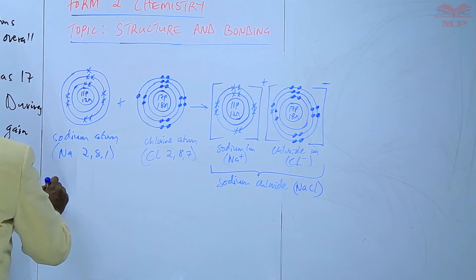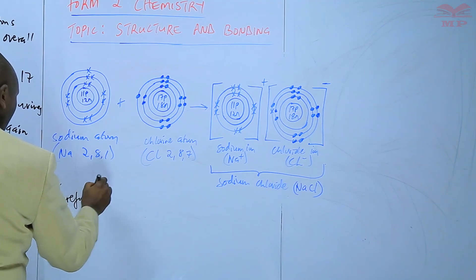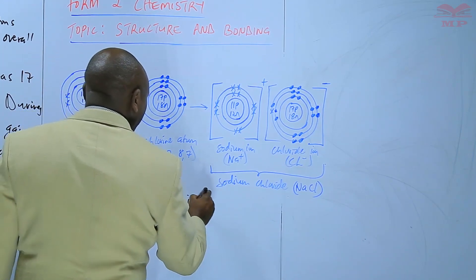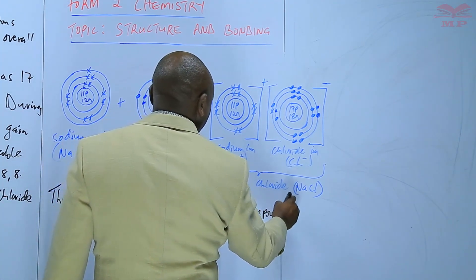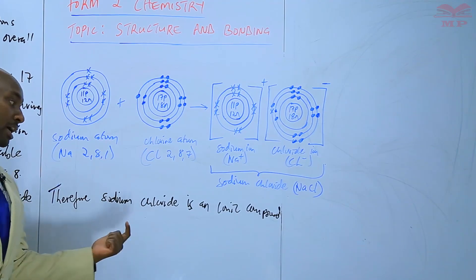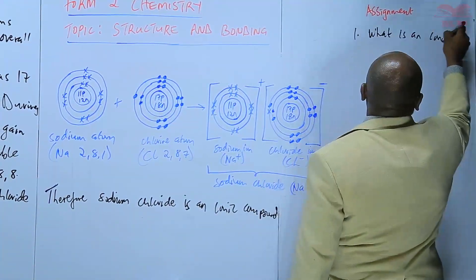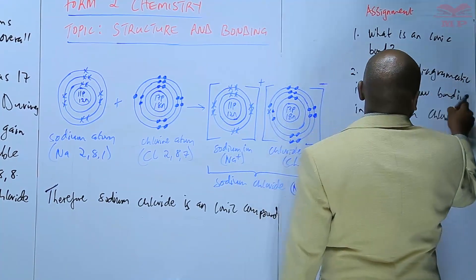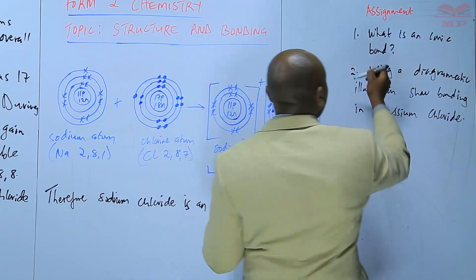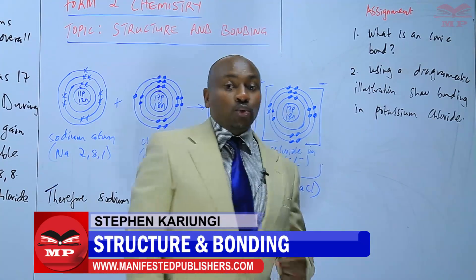When you combine the two, you get sodium chloride, NaCl. The positive charge in sodium cancels with the negative charge in the chloride, so sodium chloride is written as NaCl. Therefore, sodium chloride is an ionic compound because it is made up of ions bonded together by ionic bonds. For the assignment: number one, what is an ionic bond? Number two, using a diagrammatic illustration, show bonding in potassium chloride. We'll stop there until next time. Goodbye.